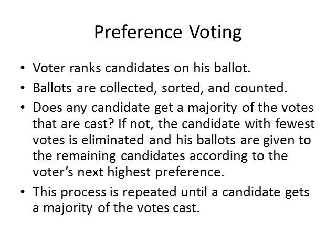Preference voting is the same as multiple round voting, except that all votes in the election are cast on a single ballot. Instead of marking one and only one candidate, each voter ranks the candidates in order of preference. If no candidate gets a majority of the votes cast, the candidate with the fewest votes is eliminated, and his ballots go to the voter's next highest preference. This continues until one candidate gets a majority of the votes cast.